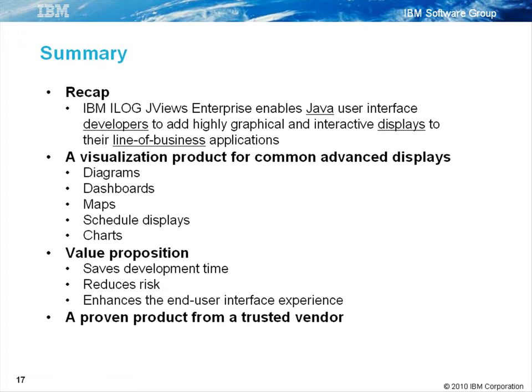JV's Enterprise is a visualization product that provides five types of displays: diagrams, dashboards, maps, schedule displays, and charts. Finally, we note that JV's Enterprise has been field tested for many years and comes from a trusted vendor.